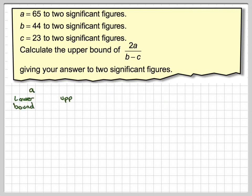So we've got A, let's work out the upper and lower bound for A, where A is 65 to 2 significant figures. So the lower bound is going to be 64.5, and the upper bound is going to be 65.5.